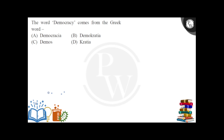Option number A is demokratia, option number B is demokratia, option number C is demos, and option number D is fetia.